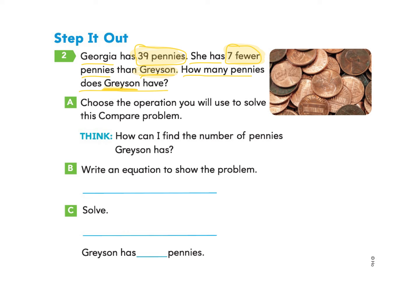And our job is to find out how many Grayson has. So if I know what she has, and I know the difference between what she has and what Grayson has, then I'm going to put those two together. So I'm going to use an addition equation.